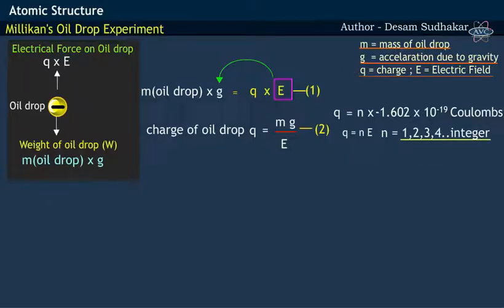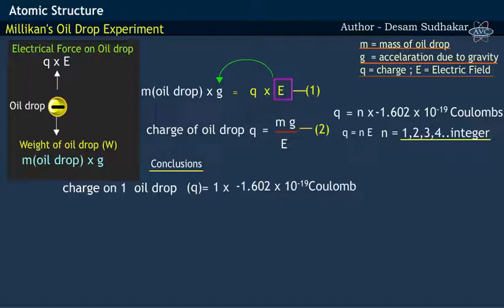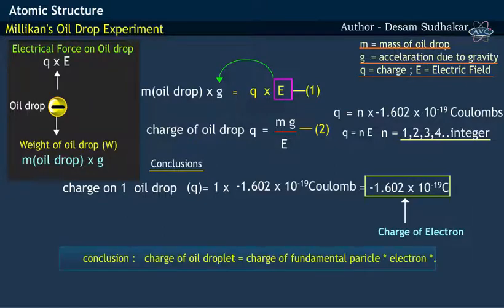From this experiment, Robert Millikan has concluded that this fundamental unit of charge on one oil droplet, which equals to the value minus 1.602 into 10 to the power of minus 19 coulombs, is nothing but the charge of electron.